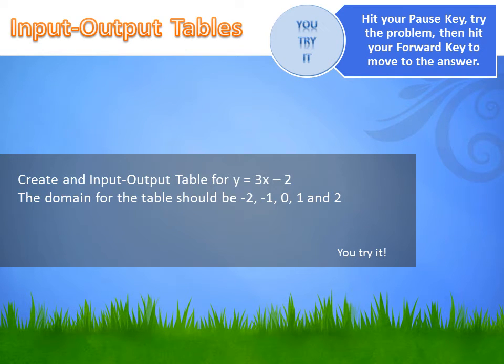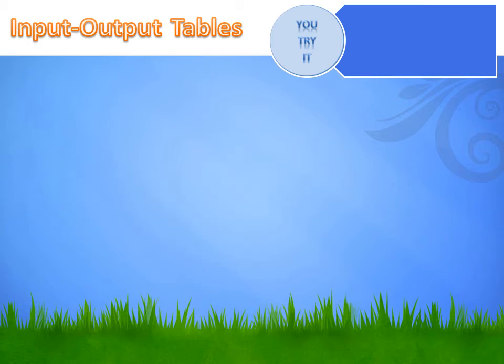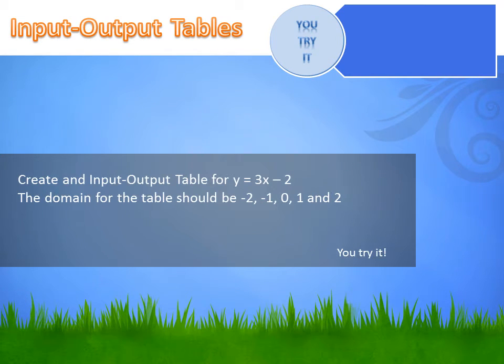You try this one. Hit your pause button, try the problem, and then hit your forward key to move on to the answer. Well, we're supposed to create an input-output table for the function Y equals 3X minus 2. And the problem states that the domain of the table should be minus 2, minus 1, 0, 1, and 2. The domain, what's that mean? Well, that's all the input values that we could use in this function. It's the values of X that we're going to put into the input-output table.